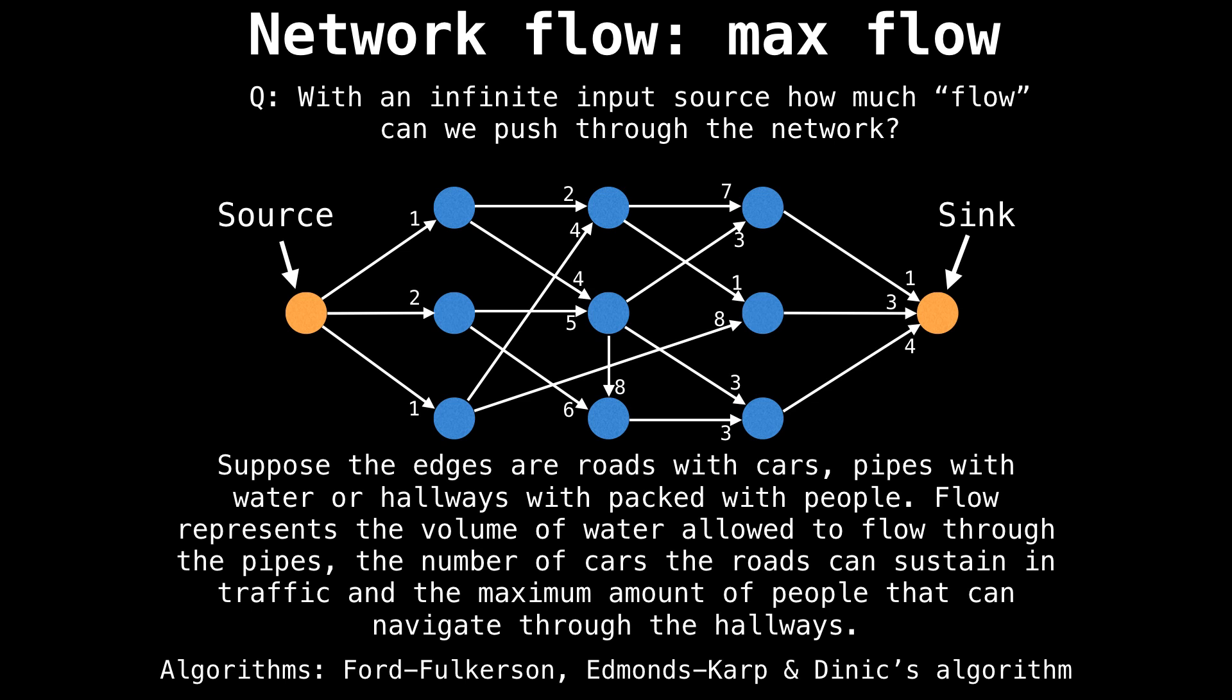In these types of flow networks, we often find ourselves asking the question: with an infinite input source, that is of cars, water, boats, whatever, how much flow can I push through the network, assuming we start at some source and try and make it to some sink node.